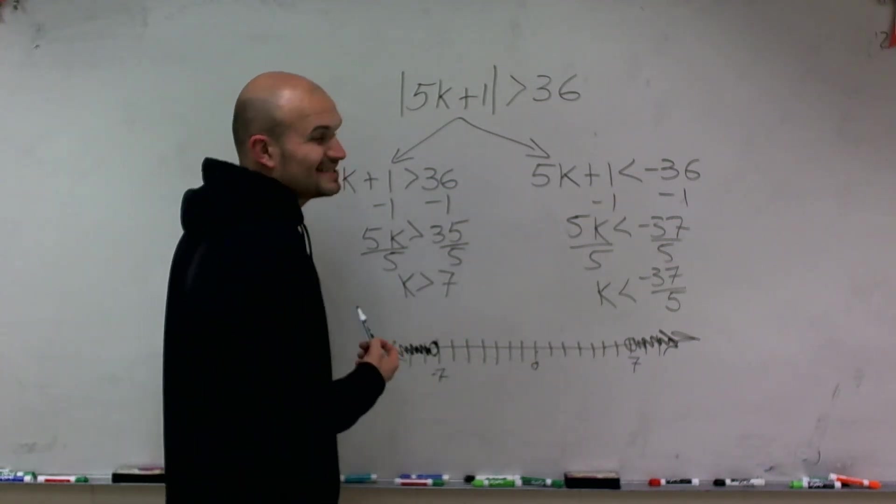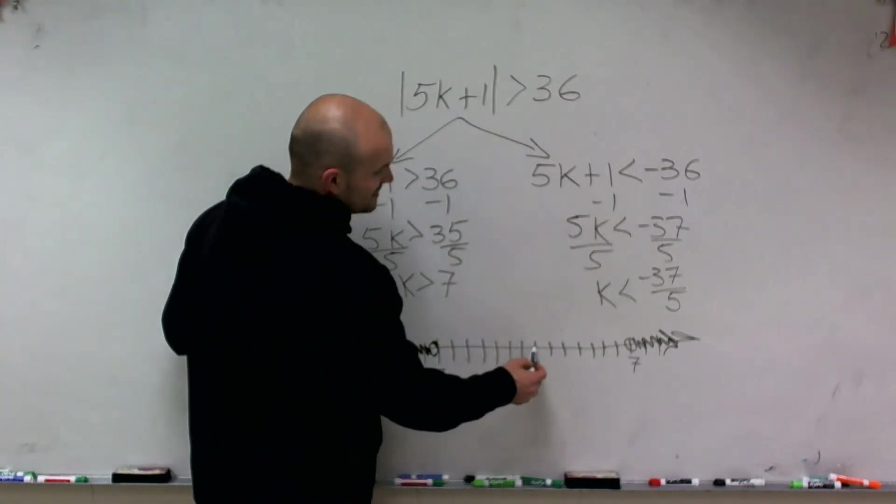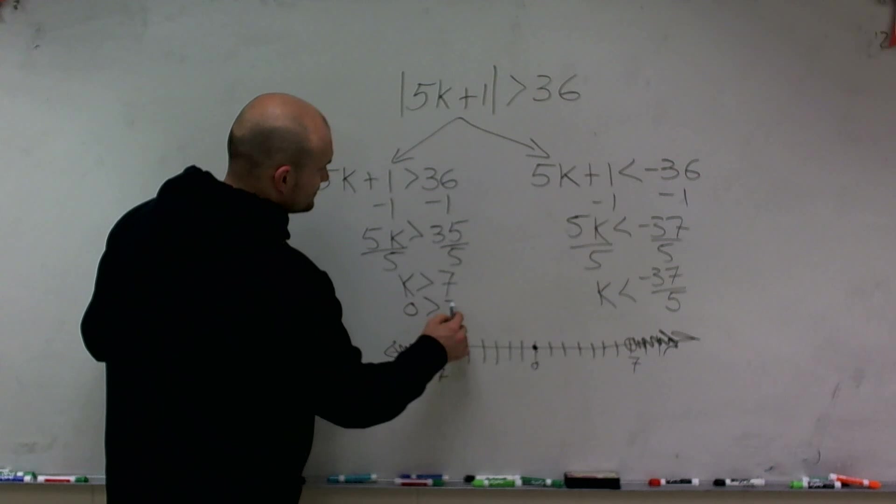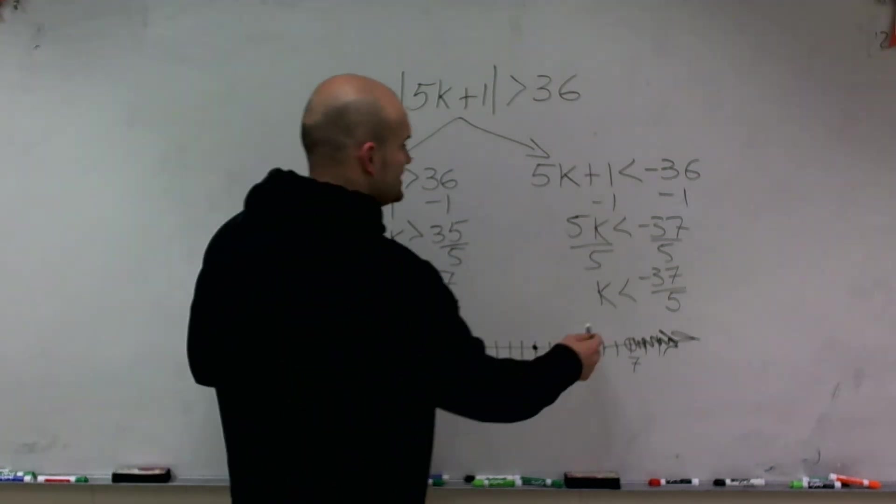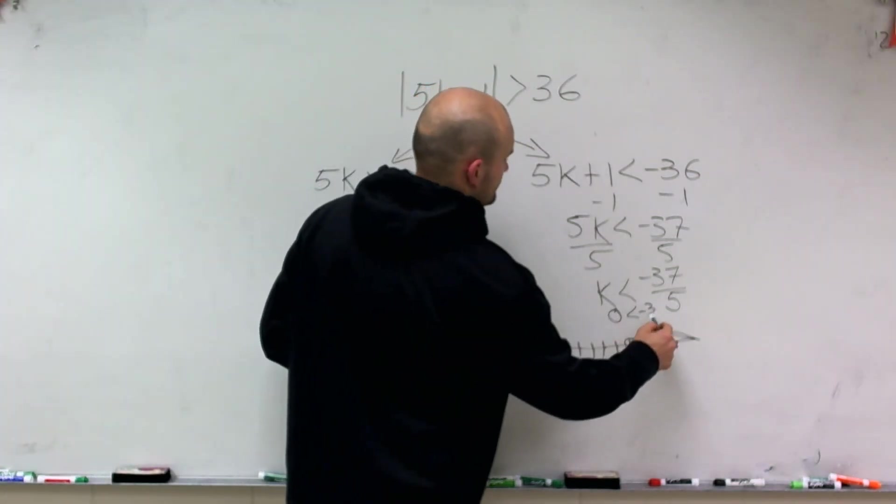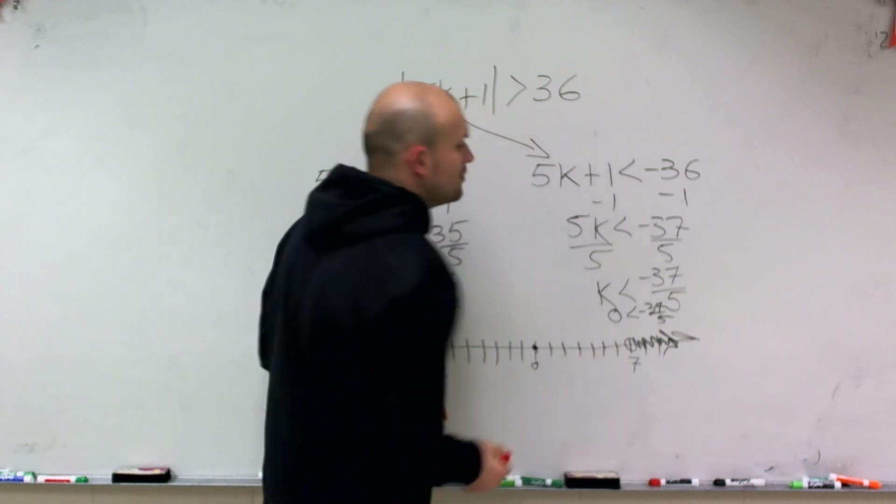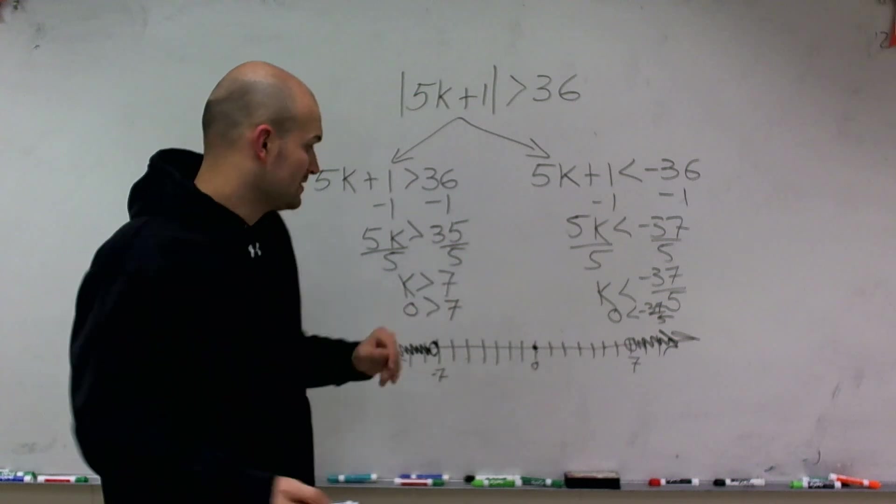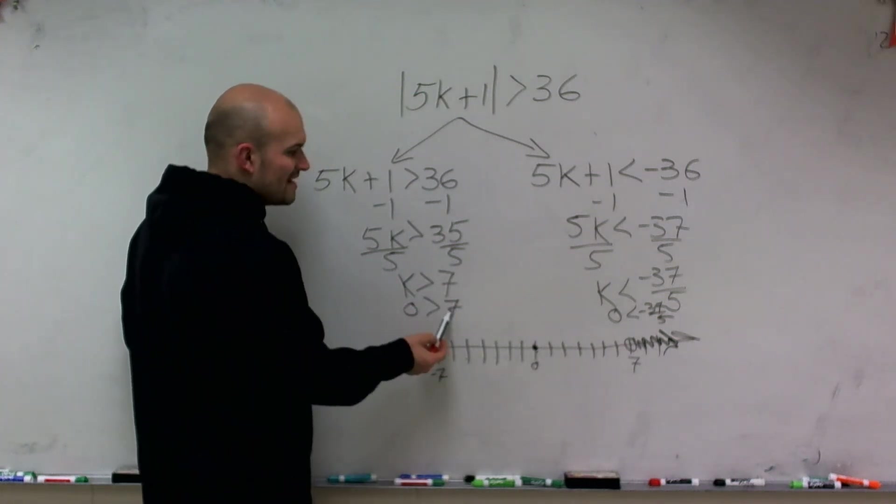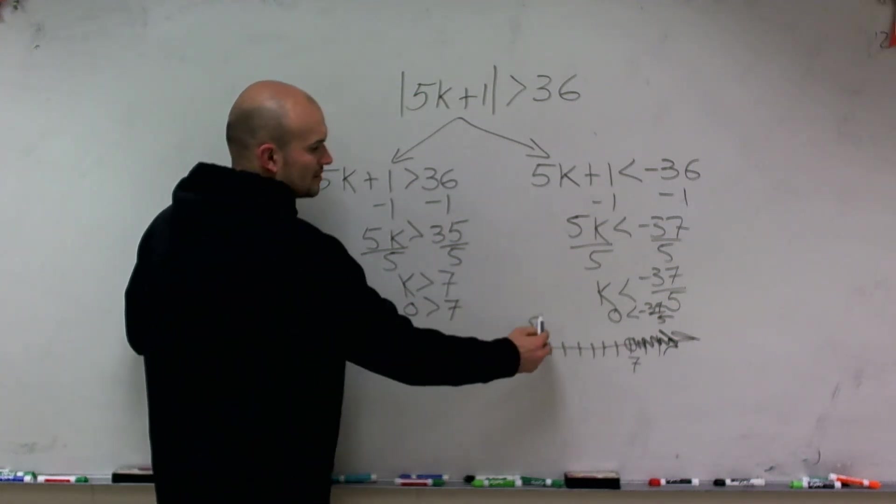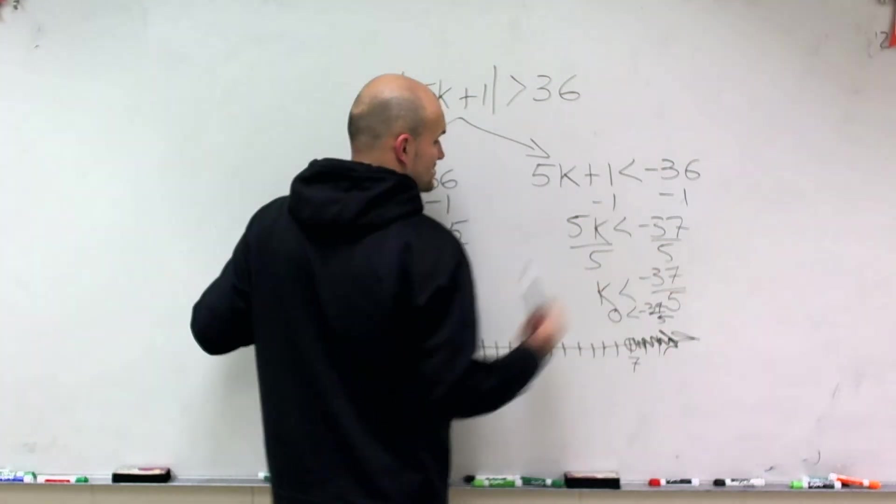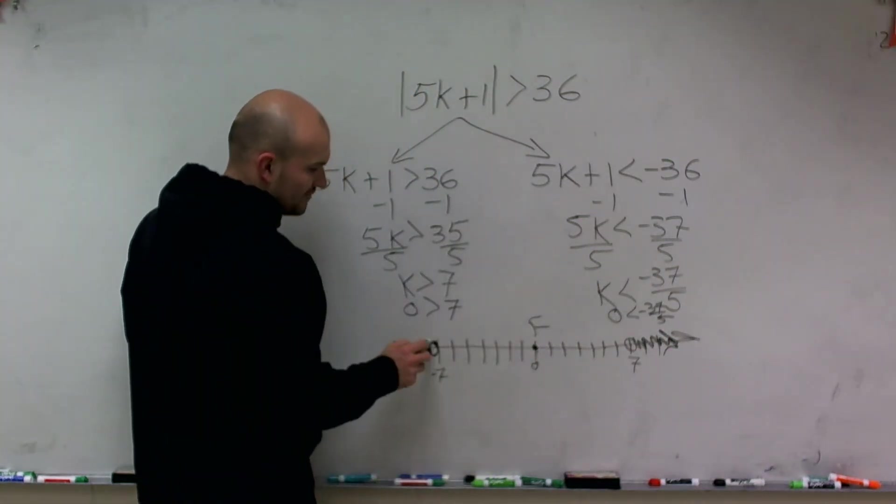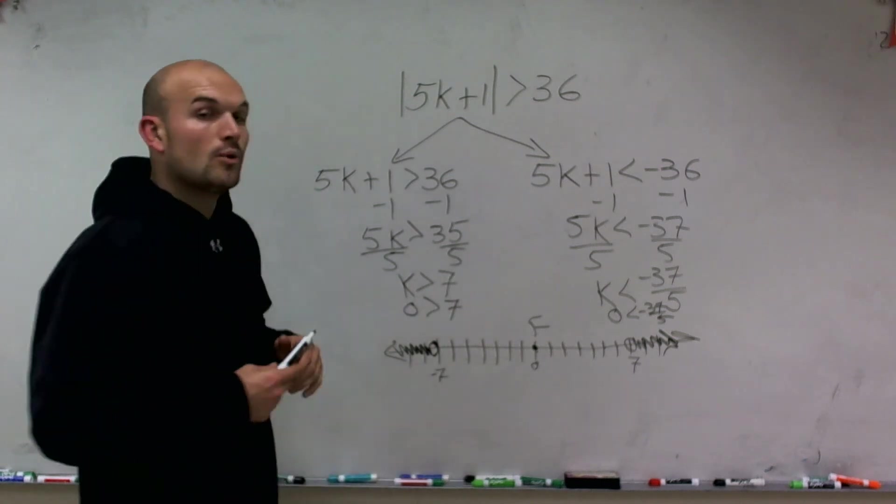Another way you could always do this is always pick a test point. And let's say we pick the easiest test point here is 0. So what you could do is you could plug in 0 for each inequality. And if it's true, then that's where you shade towards your true test point. If it's false, you're going to shade away. So what I notice is 0 is greater than 7. For that point, it's false. So therefore, I shade on the other side of my point. For here, 0 is less than negative. That's false as well for this equation. So that's why I shade away from my test point.